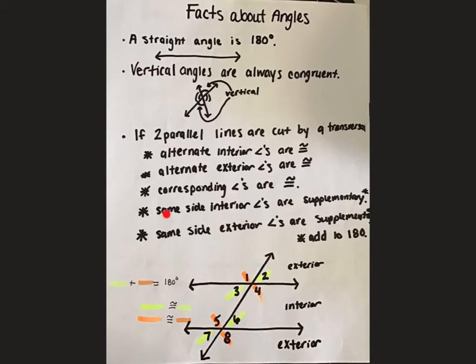The same side or consecutive interior angles, so like 3 and 5, or 4 and 6, are supplementary. And that also applies to same side exterior or consecutive exterior, so like 1 and 7, or 2 and 8.